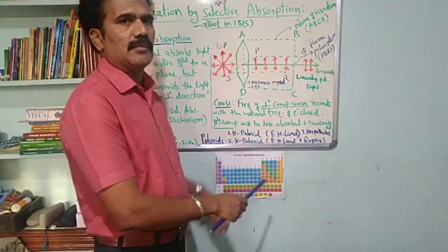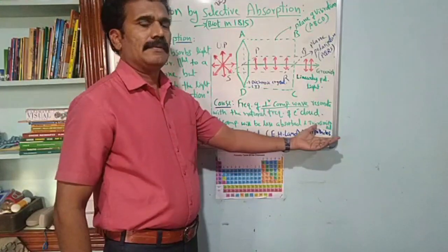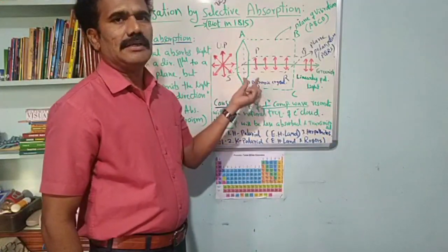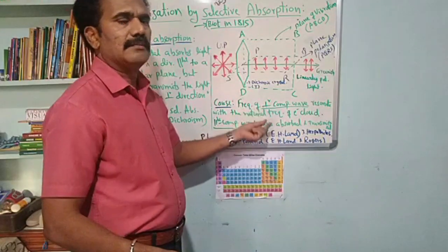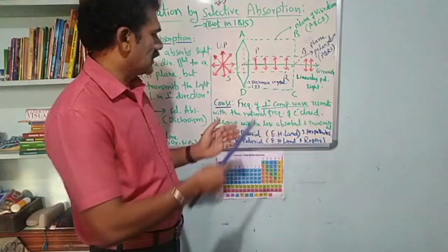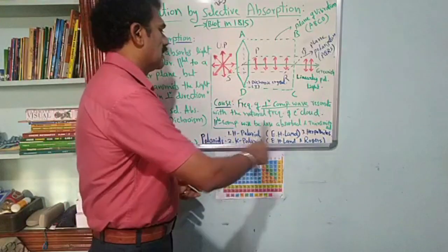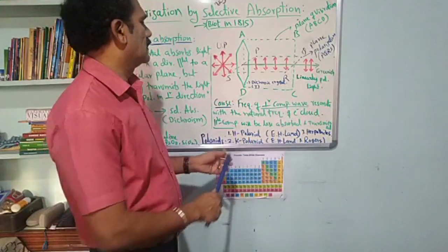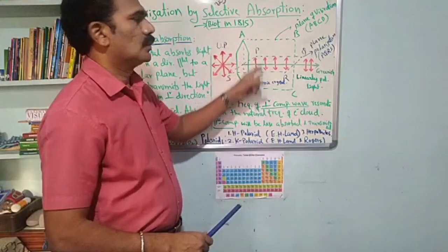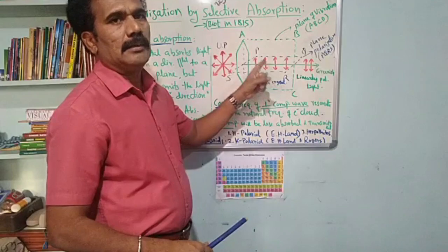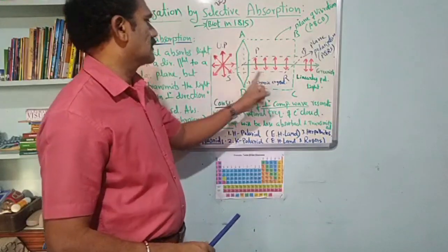If the crystal is thin, we can observe absorption on both sides. Whereas if the thickness is more, the parallel components are not absorbed at all. Depending upon the thickness, there is a difference in absorption between the parallel component and perpendicular component. This is the cause for selective absorption in a crystal.